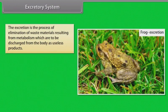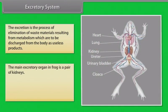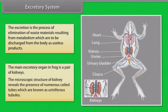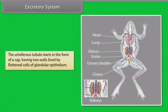Excretory System. Excretion is the process of elimination of waste materials resulting from metabolism, which are to be discharged from the body as useless products. The main excretory organ in frog is a pair of kidneys. The microscopic structure of the kidney reveals the presence of numerous coiled tubes known as uriniferous tubules. These uriniferous tubules start in the form of a cap having two walls lined by flattened cells of glandular epithelium.